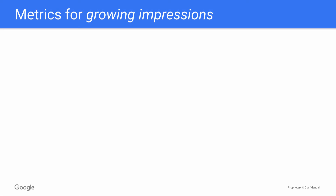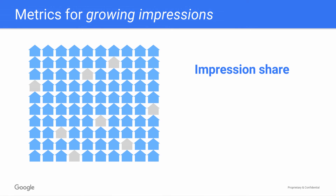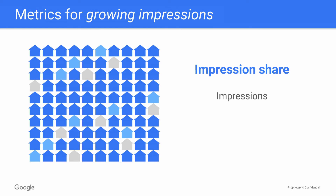Now, shifting to the growing impressions goal, you have one key metric called impression share. Of all of your eligible impressions, you want to capture as many as possible so you're showing your hotel ads to people looking for your properties. Your impression share is what percentage of the time you could have shown a hotel ad that you actually did — in other words, it's your actual impressions, the number of times users saw your ads, divided by your eligible impressions, the number of times your ads were eligible to show.